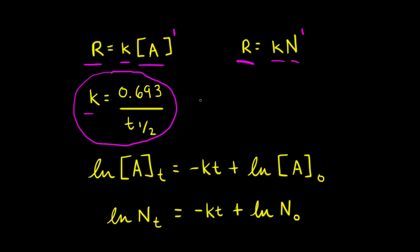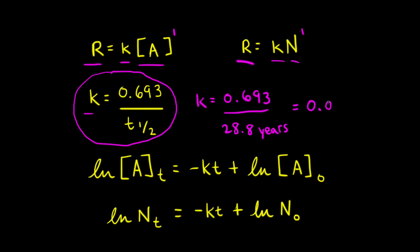The rate constant K equals 0.693 divided by the half-life. For example, if we want the rate constant for the radioactive decay of Strontium-90, K equals 0.693 divided by 28.8 years. When we do that math, we find that K is equal to 0.02411 per year.